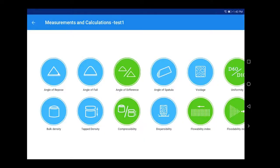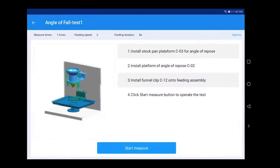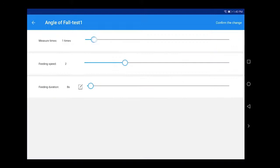Angle of repose will be automatically achieved during angle of fall measurement. Click Angle of Fall. Click Options, and set measure times, feeding speed, and feeding duration as required.